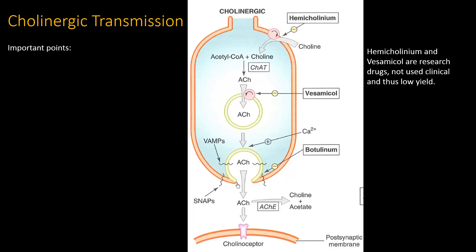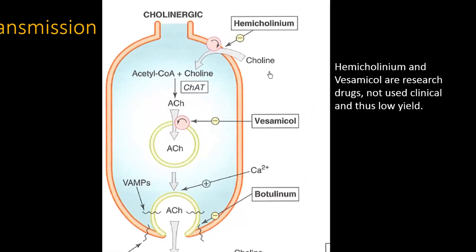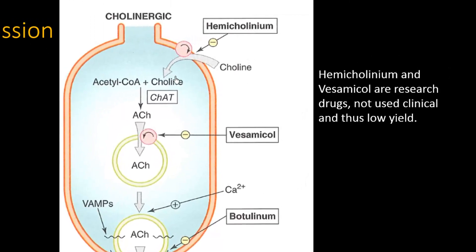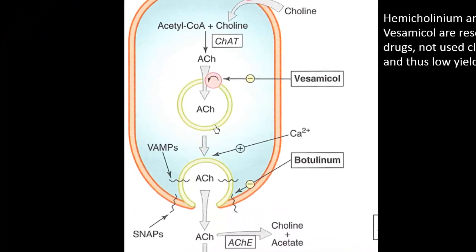This is the presynaptic neuron and this is the postsynaptic neuron. Choline is getting transported into the presynaptic cell, and it binds with acetyl-CoA, which is coming from the mitochondria, to form acetylcholine. Acetylcholine then gets transported into a vesicle.